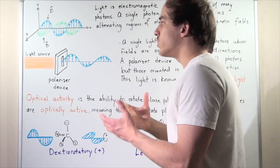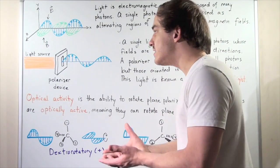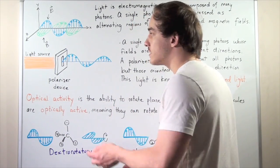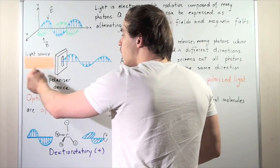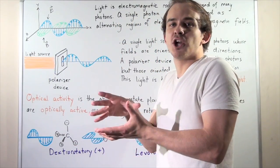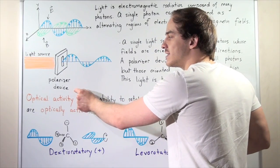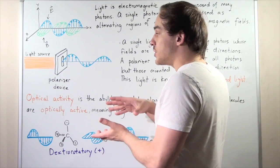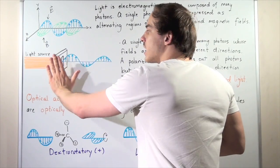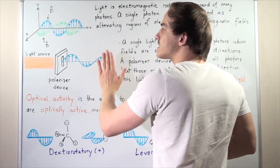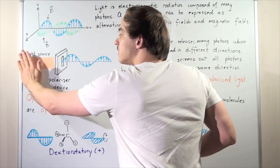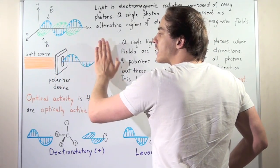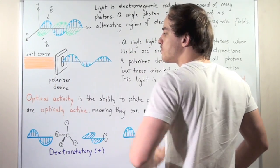Here we have an example. We have some light source that releases rays of light — our electromagnetic radiation, our photons — and all these photons have fields oriented in different directions. What this polarizer device does is it polarizes the light, screens out all different directions of fields, and only leaves the ones pointing in one direction, let's say along the x-y axis. So once light comes through our device, only electromagnetic radiation pointing in the x-y direction exists.